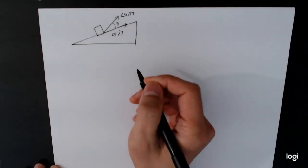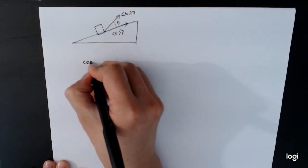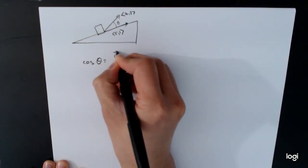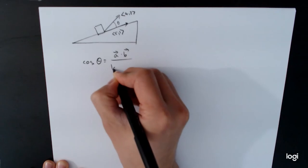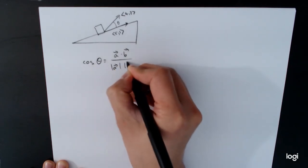Well, this only requires us to remember which formula we need to use, which is the angle for the cosine of theta is equal to a dot b divided by the length of a times the length of b.